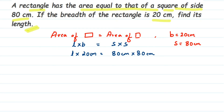We want to find out the length. So L multiplied by 20 centimeter is equal to 80 multiplied by 80. 8 eights are 64, so we get 6400, and you have two zeros, giving us 6400 centimeter into centimeter.